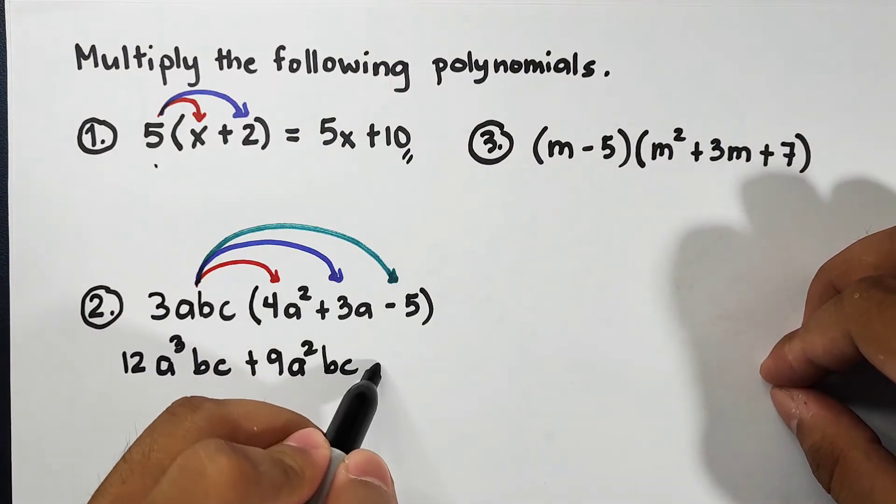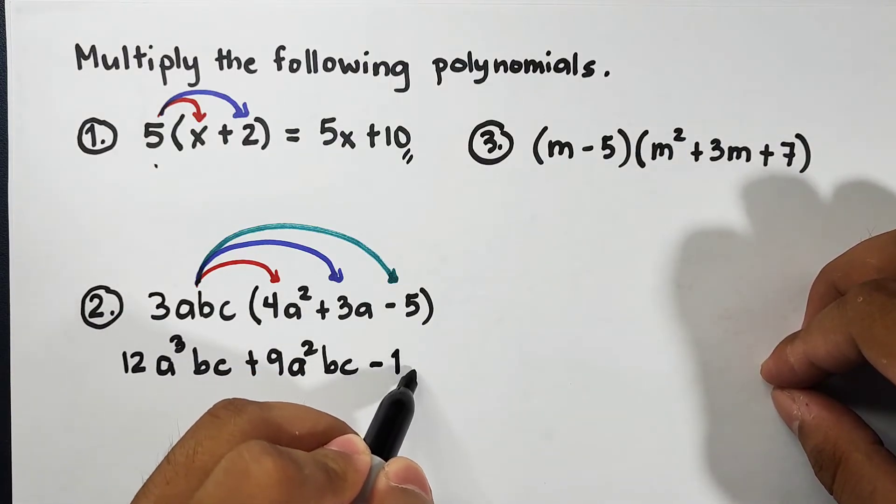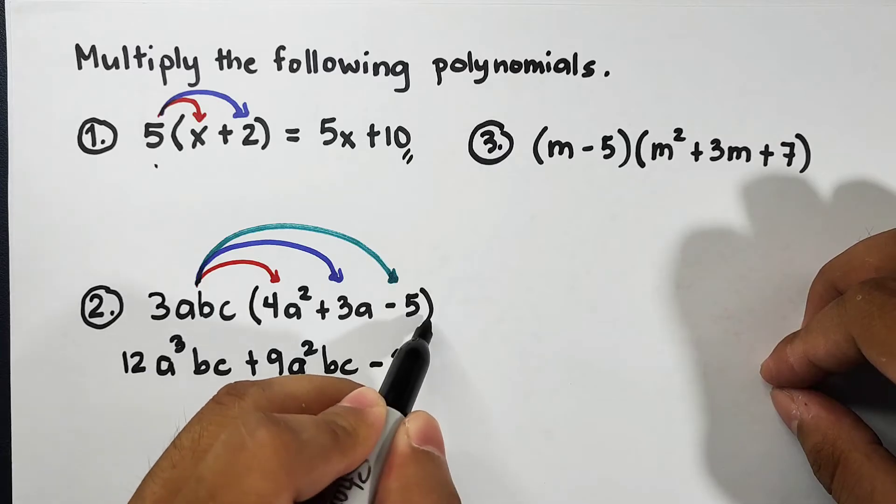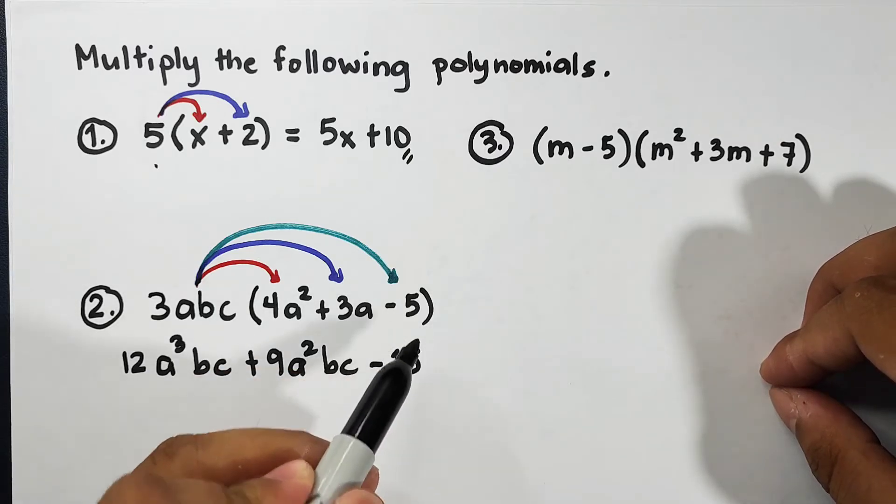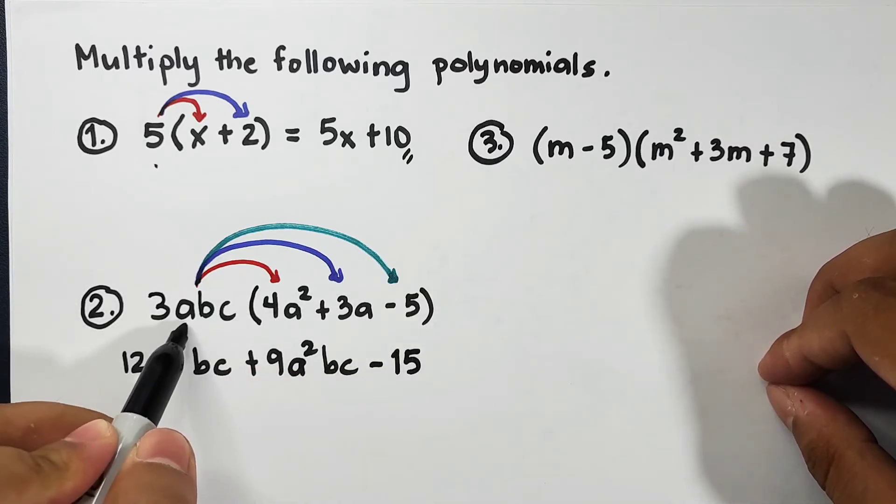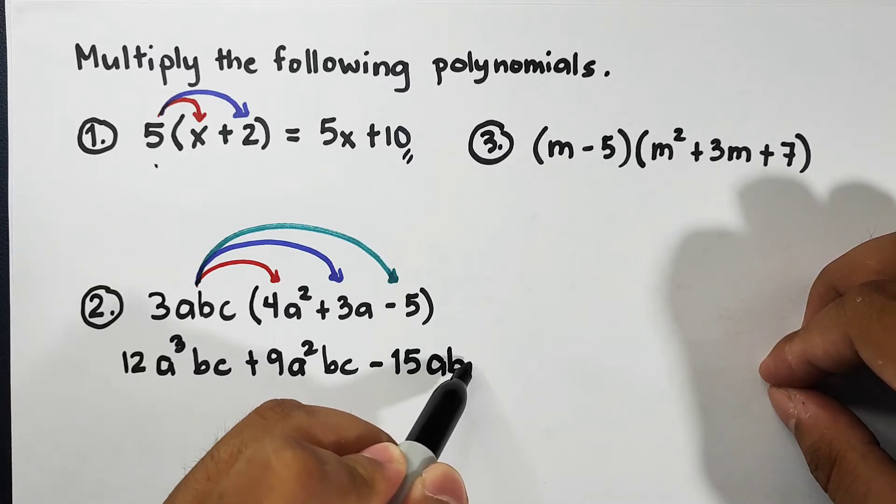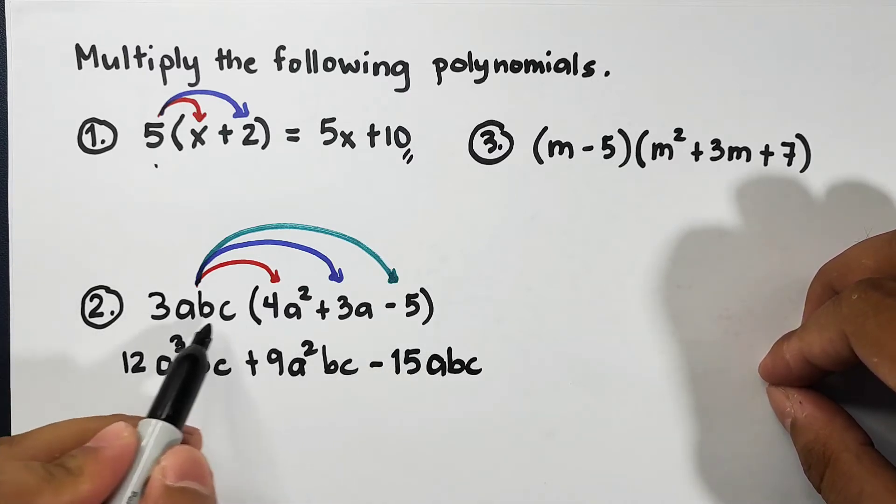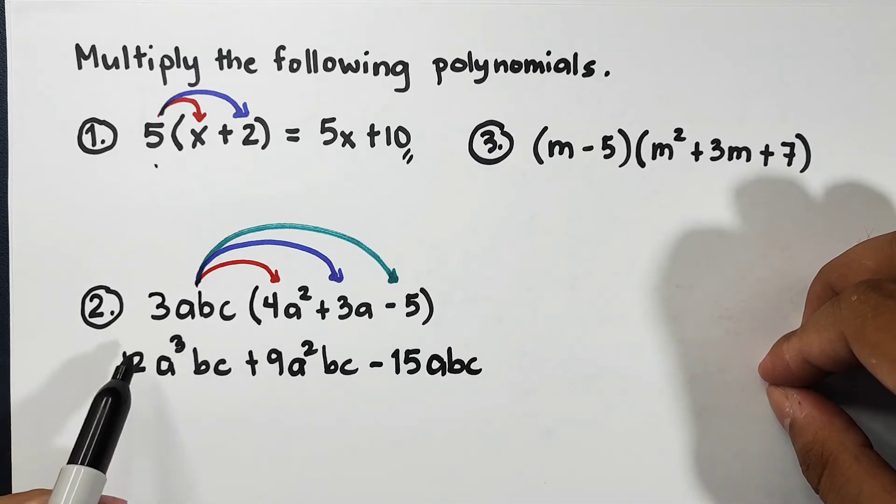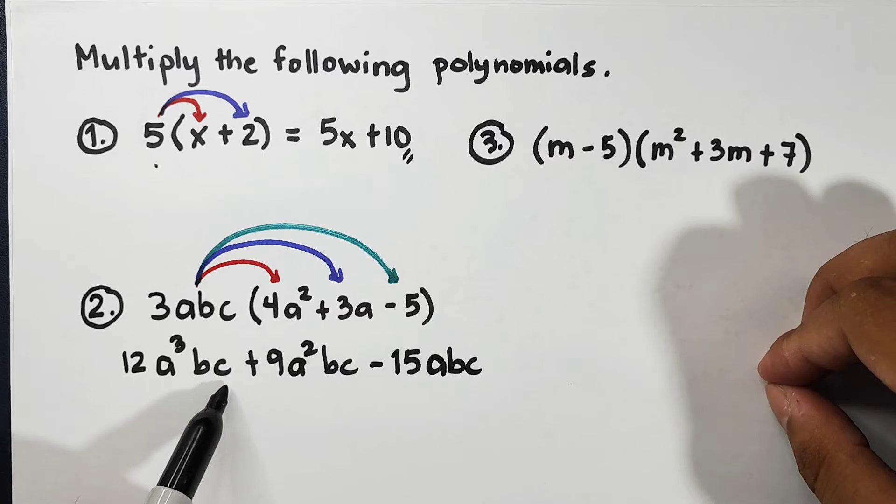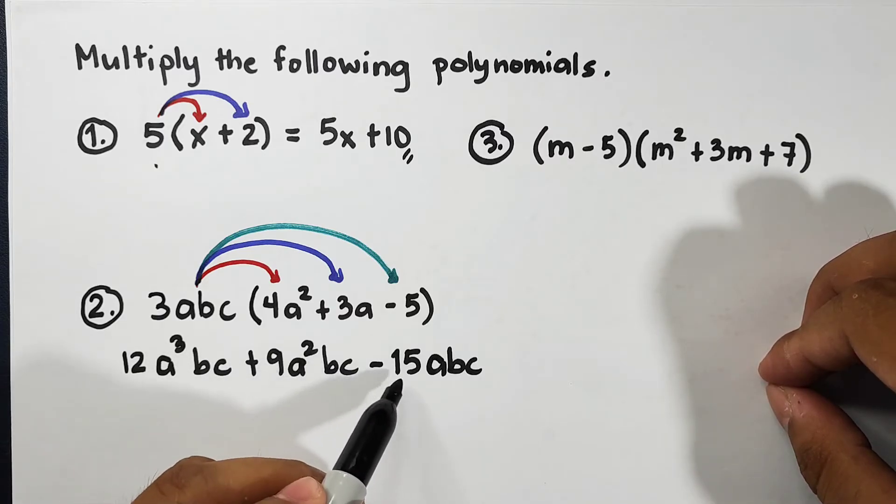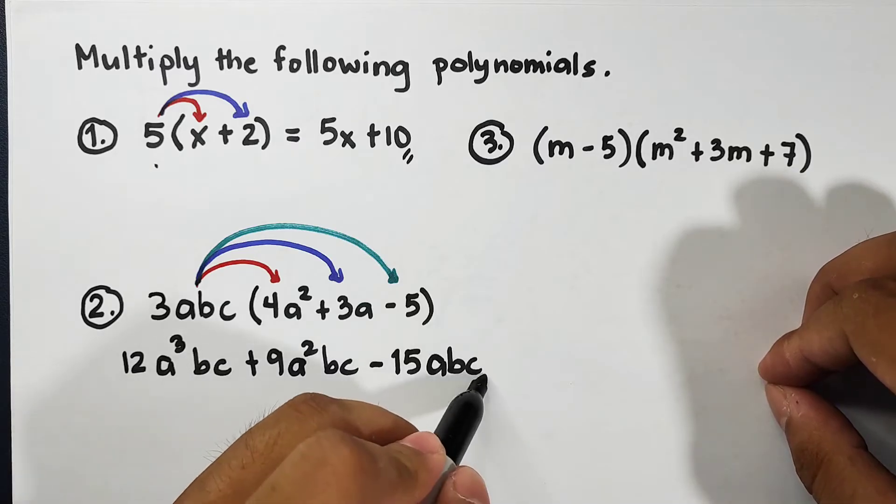3 times negative 5 is negative 15. Since negative 5 doesn't have a variable, we will copy a, b, and c. So here it is guys, the answer or the product between these two polynomials is simply 12a³bc plus 9a²bc minus 15abc. This is the final answer.